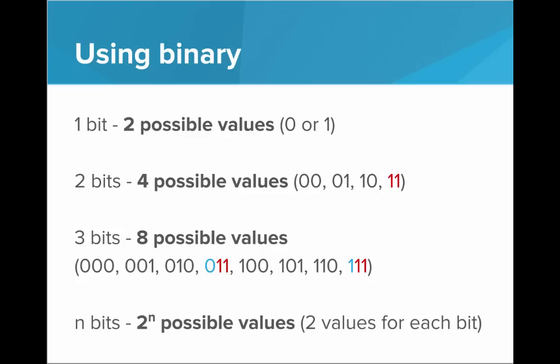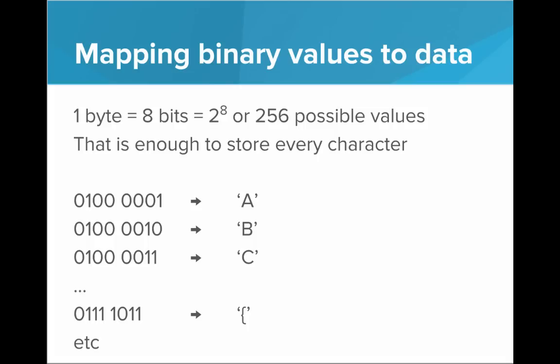But how does that actually turn into the songs or the text that we're reading? Well, all we have to do is create a mapping that defines what each of these different binary values will actually mean in terms of the data we want to represent. For example, if we have one byte to work with or eight bits, that's two to the eighth or 256 possible values to work with. And that's enough to store every character we'd ever want to type. So all we have to do is make a little table that says, hey, this binary string, that's going to mean A, this binary string, that's going to mean B, and do that for every possible character.